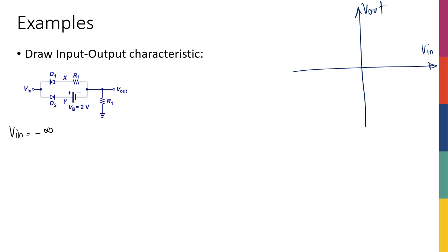With V_in equal to negative infinity, I can tell that D2 is definitely off, because the anode of D2 is connected to negative infinity and the cathode cannot take any voltage smaller than that. D1 is likely on, because the voltage at node X will hopefully be big enough to turn D1 on — but this is an assumption I need to go back and verify later.